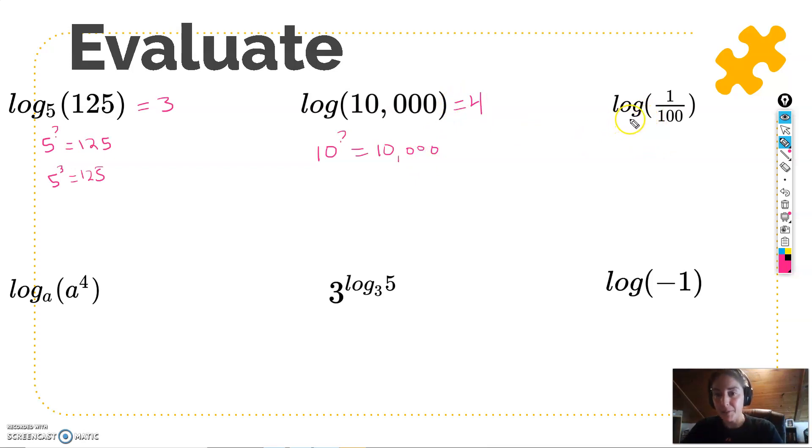What about a little bit more difficult? Log of 1 over 100. So how do we do this? 10 to what power equals 1 over 100? Is there another way I could express 1 over 100? Maybe using my negative exponents. 1 over 100 is actually 10 to the negative 2 power. So my answer here would then be negative 2. 10 to the negative 2 power will give me 1 over 100.